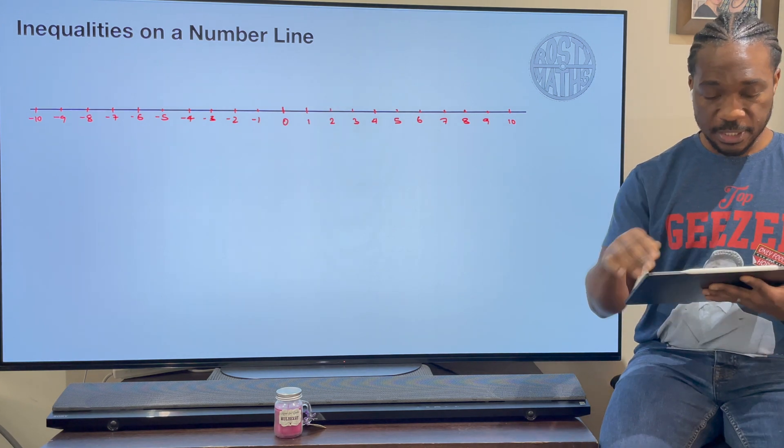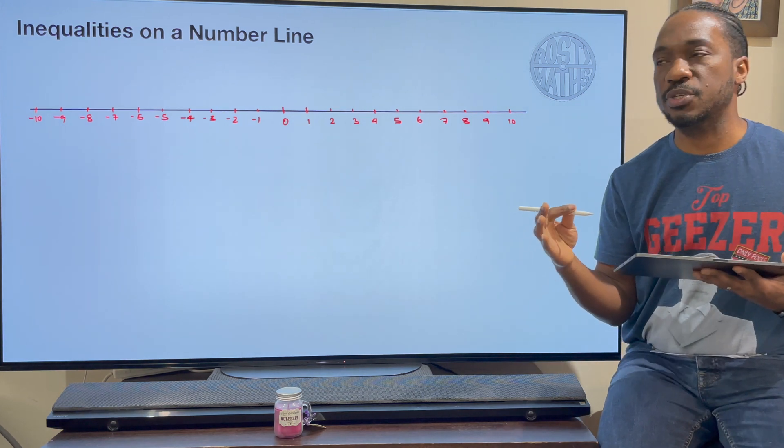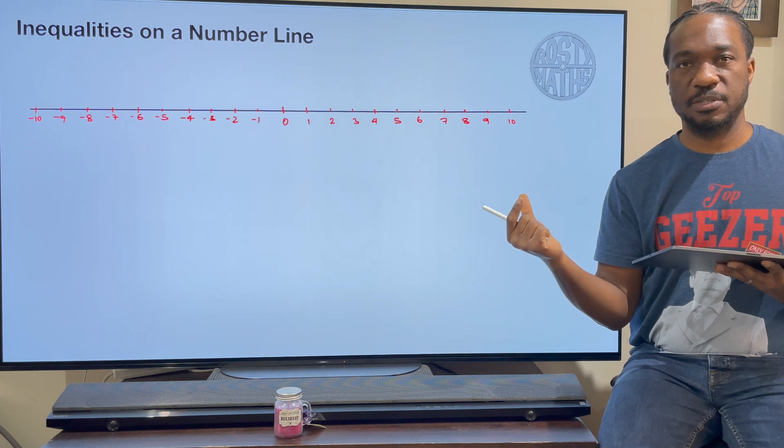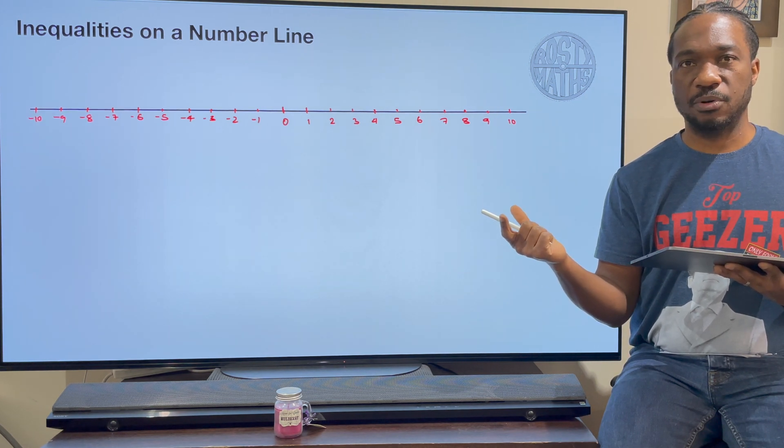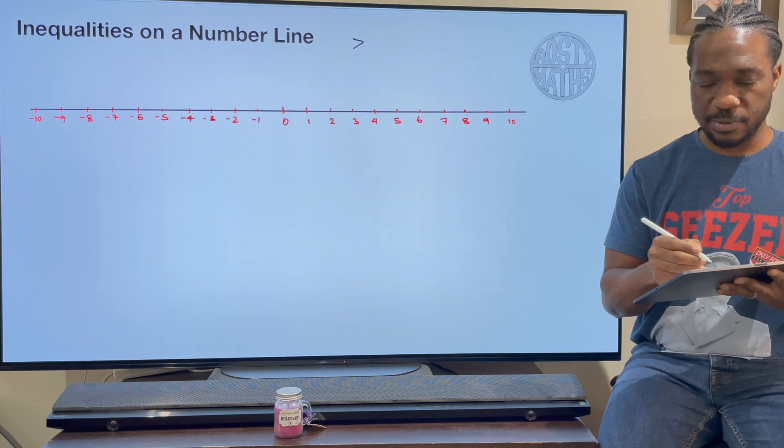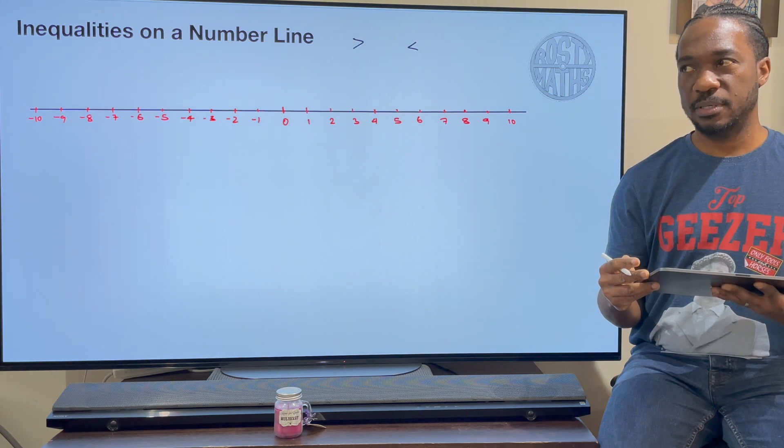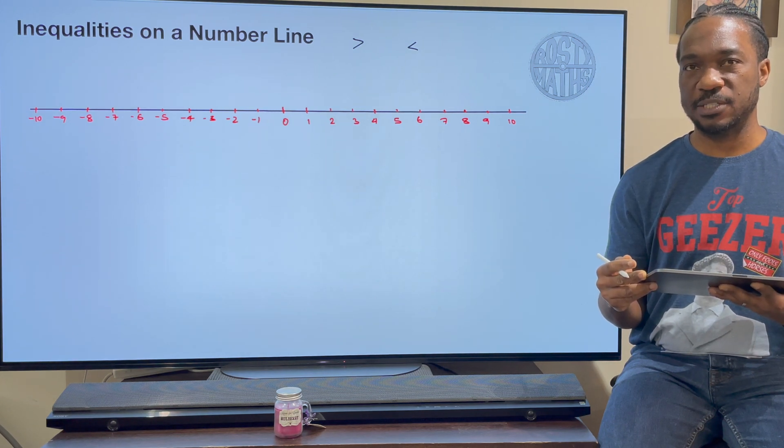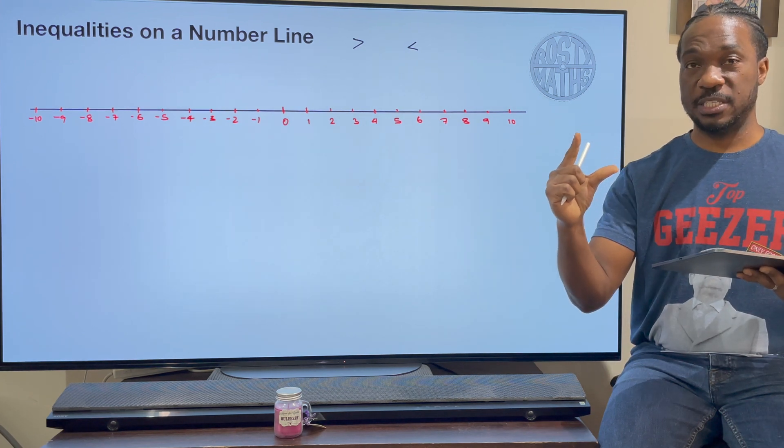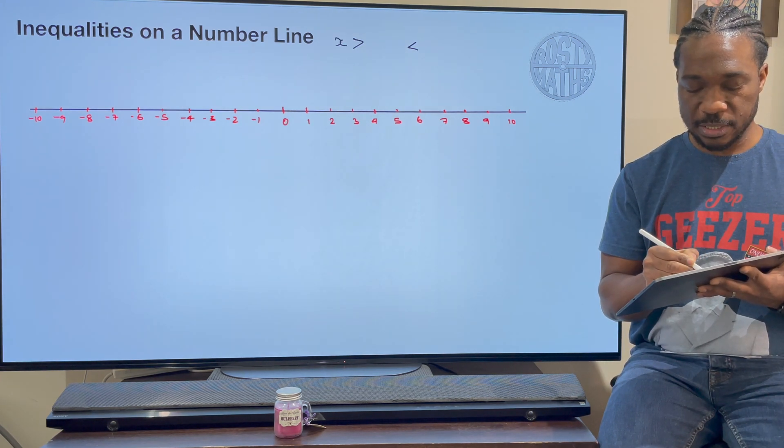First of all, I want to get rid of this myth from primary school that your inequality has to be facing a particular direction for it to be greater than or less than. So you would have seen this before. Most people would say this means greater than and this means less than, but it could mean whatever I want it to mean because it doesn't matter which direction it faces. What matters is what is facing the open side of it.